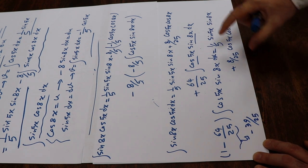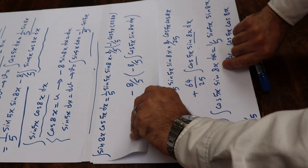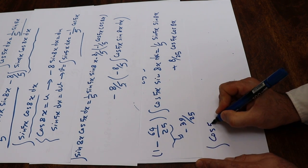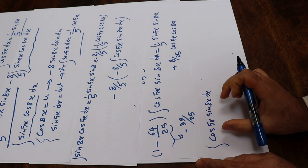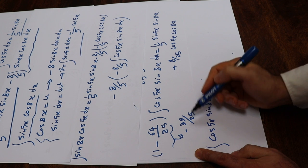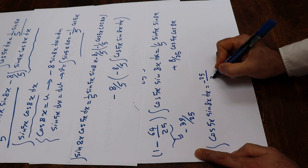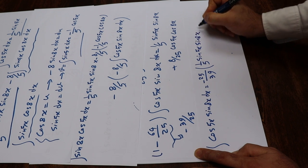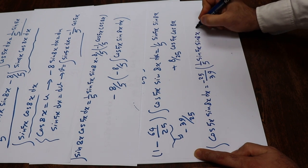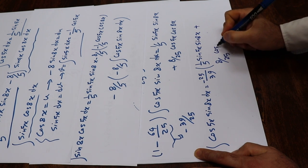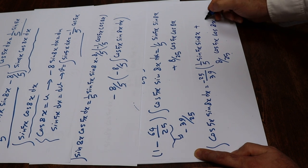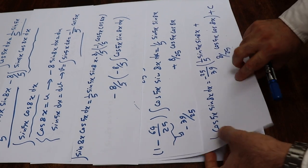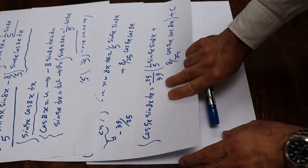Therefore this integral equals those terms times minus 25 divided by 39. Therefore the integral of cosine 5x sine 8x dx equals minus 25 divided by 39, times 1 divided by 5 sine 5x sine 8x plus 8 divided by 5 cosine 5x cosine 8x. That is basically the solution of this integral, plus c. You may also want to multiply this factor through each term to make it look a bit nicer.